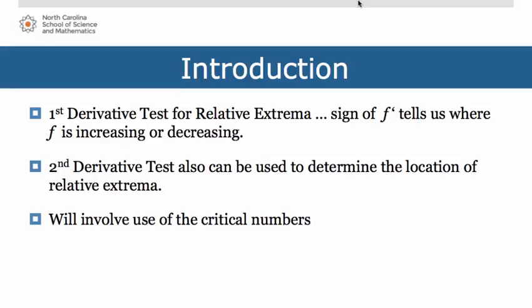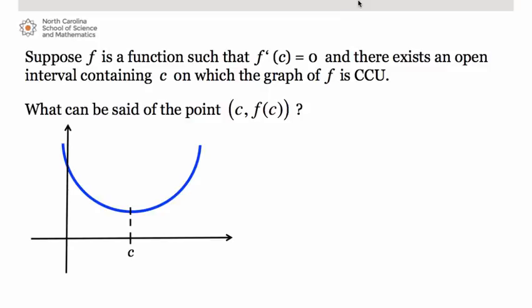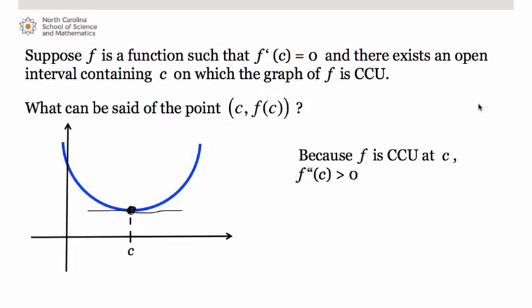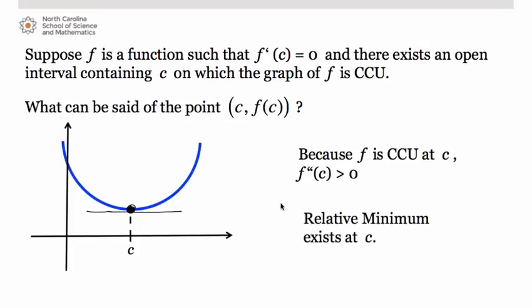Suppose f is a function such that f prime of C equals 0 and there exists an open interval containing C on which the graph of f is concave up. Since f prime of C equals 0, that tells us we have a horizontal tangent line to the curve at C. Because we know the function is concave up at C, we know also that the second derivative at C is greater than 0, and observing the graph we can see a relative minimum exists at C.